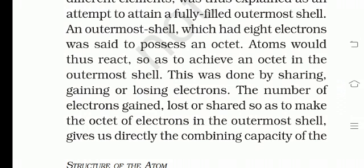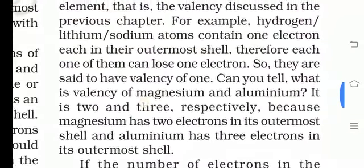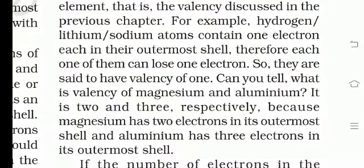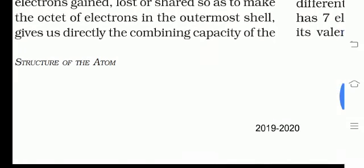The number of electrons gained, lost, or shared so as to make the octet of electrons in the outermost shell gives us directly the combining capacity of the element — that is the valence. Last chapter mein humne padha hai ki agar koi element ka structure hai, uski paas kitne electrons hai outermost shell mein, kitne usne gain kiya, kitne usne lost kiya, kitne usne share kiya, octet fulfill karne ke liye — woh hi uski valence batati hai.